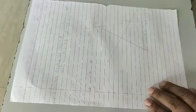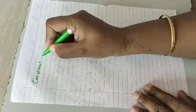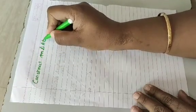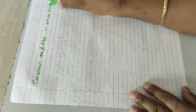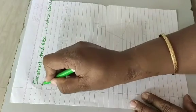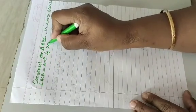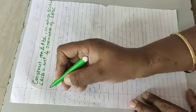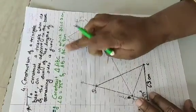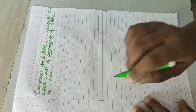Now we will see one example from the problem set. The question is: Construct triangle ABC in which BC = 5.2 cm, angle ACB = 45°, and the perimeter of triangle ABC = 10 cm. In the solved example we saw how to handle the sum of two sides; here the perimeter is given, so we handle it similarly.